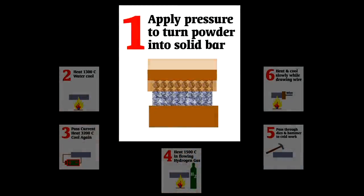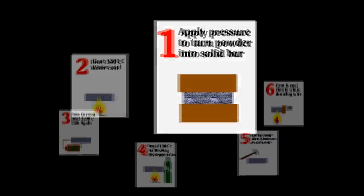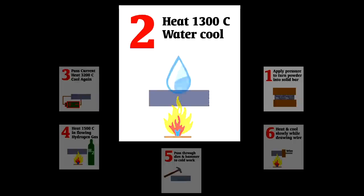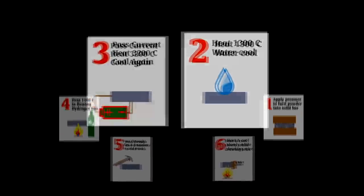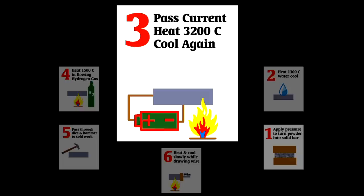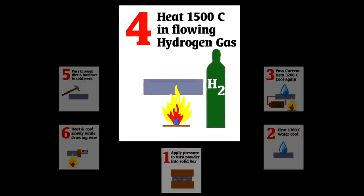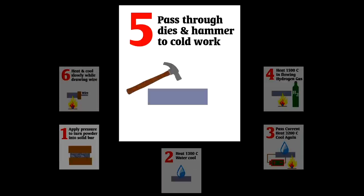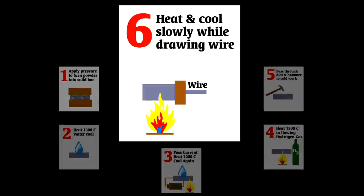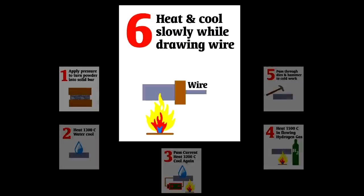One: apply great pressure to turn tungsten powder into a fragile bar. Two: heat it to 1300 degrees Celsius and then cool it with water. Three: pass a current through the tungsten while heating it to 3200 degrees Celsius, and then cool again. Four: heat yet again to 1500 degrees Celsius, but this time while flowing hydrogen over it. Five: pass it through a series of dies to cold work it and then hammer it. Six, the final step: heat it and then reduce the temperature gradually while drawing it into a one millimeter diameter wire.